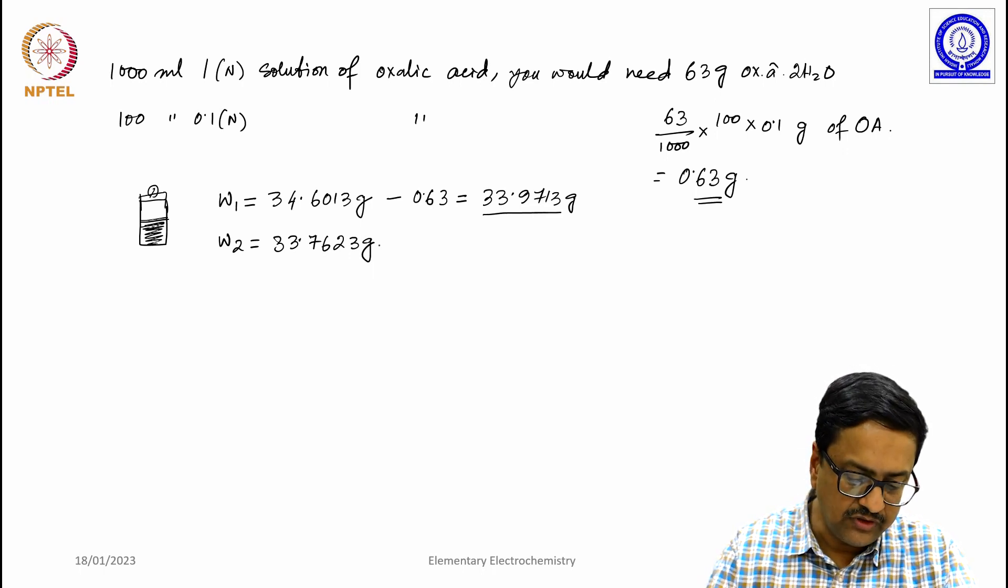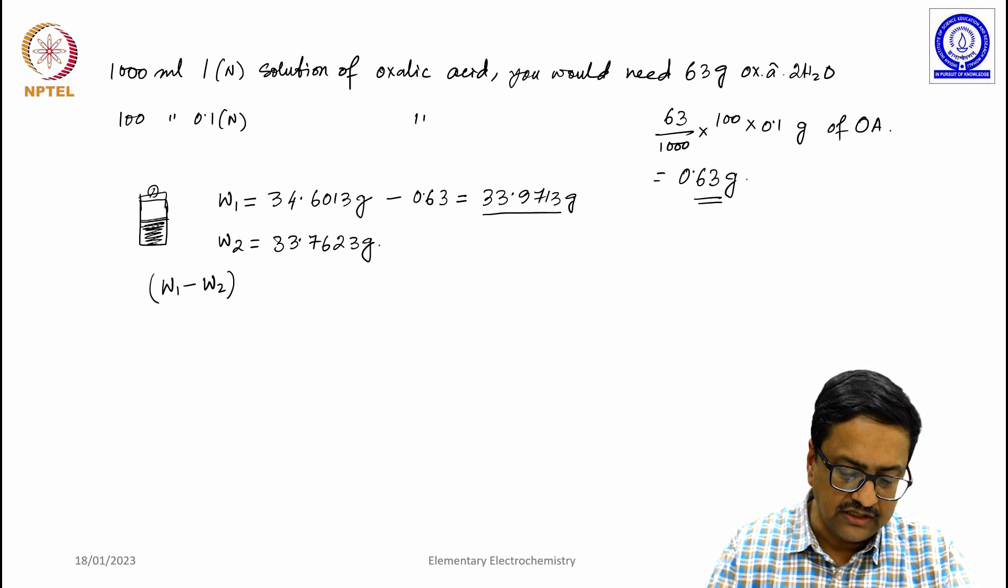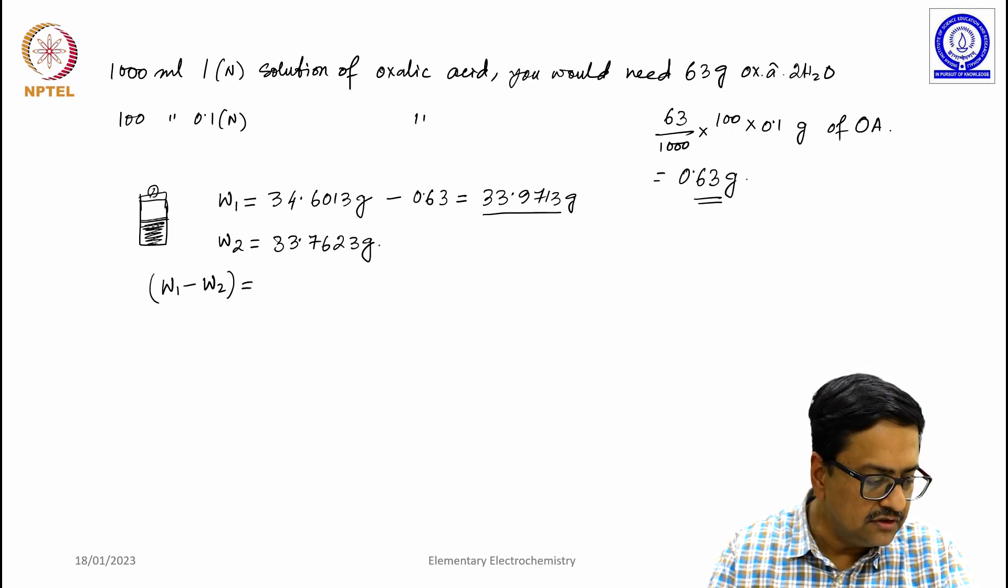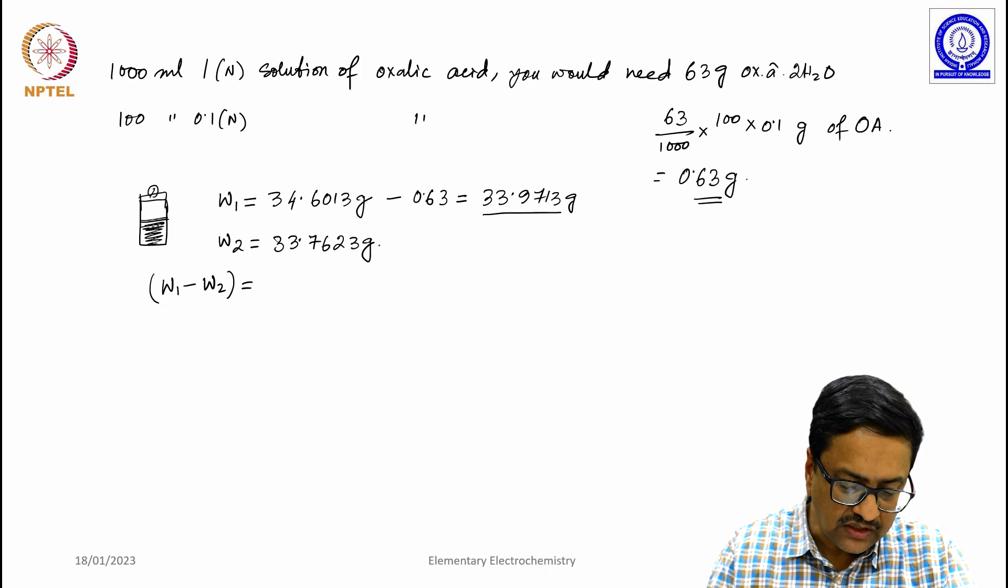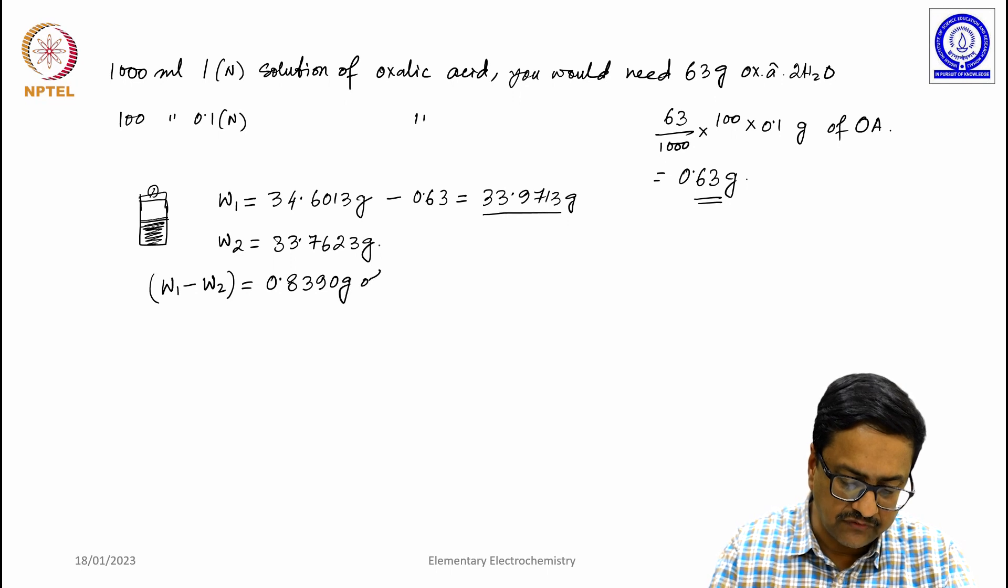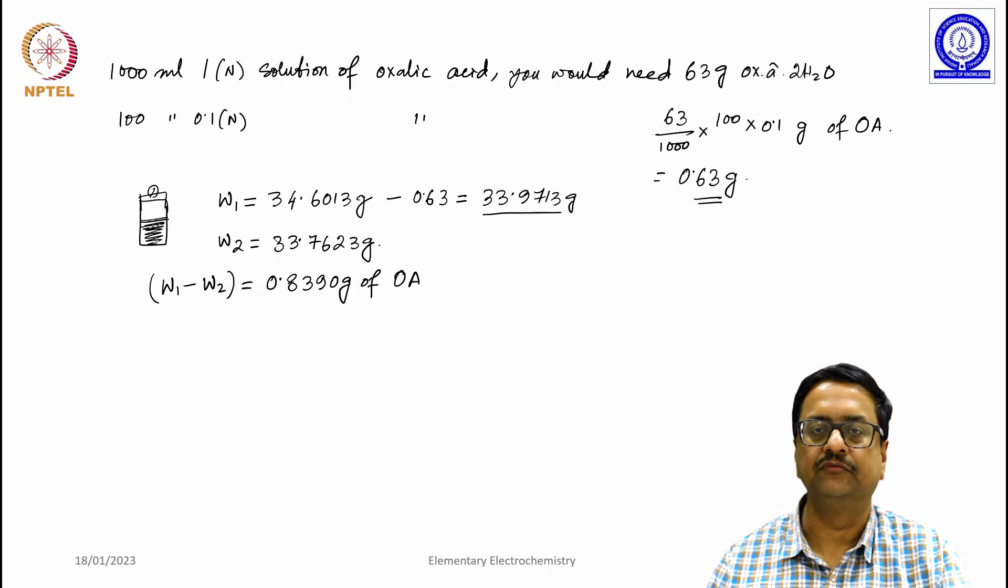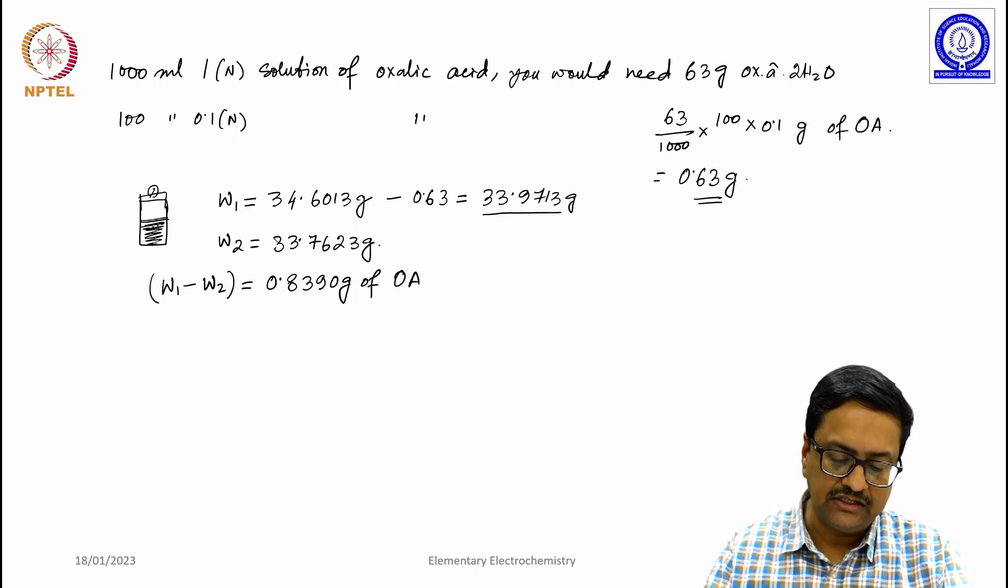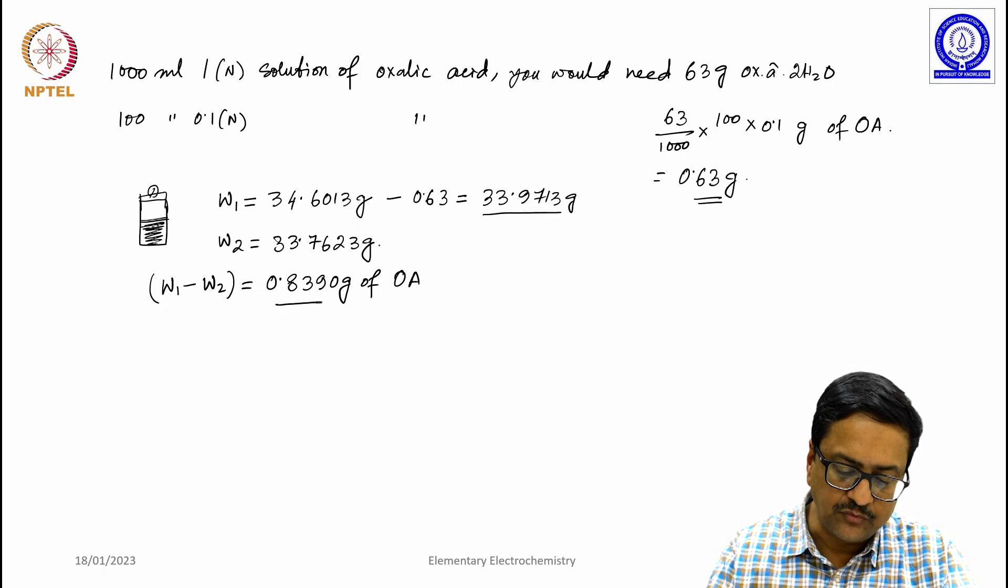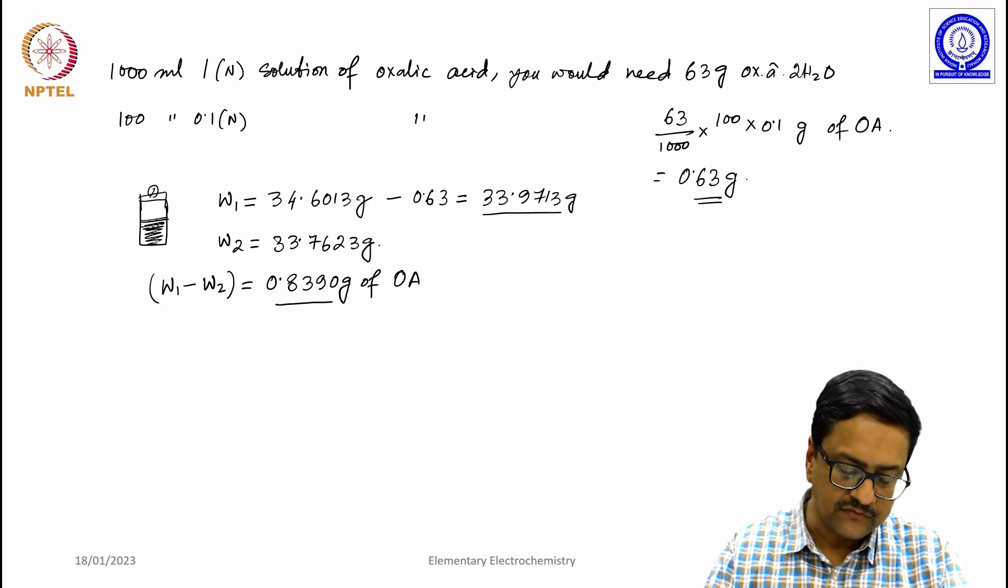That means, we have transferred W1 minus W2 that is equal to 0.8390 gram of oxalic acid instead of 0.63 gram. That means, we have transferred little more than what was required, but we know very accurately how much we have transferred.